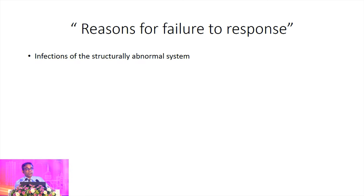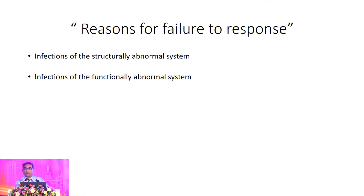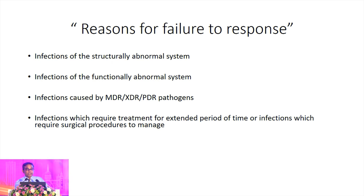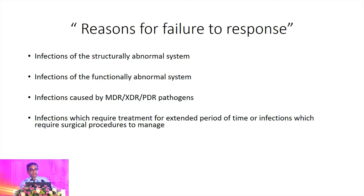First, when you get an infection in a structurally abnormal system, the infection becomes difficult to treat. Similarly, when infection occurs in a functionally abnormal system, it again becomes difficult to treat. When multidrug resistance, extensive drug resistance, or pandrug-resistant pathogens are involved in the etiology, the infection becomes difficult to treat. Another factor is where infections require an extended period of antibiotics, and also infections where you need adjunctive procedures like surgical procedures.